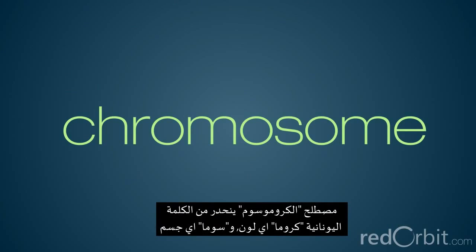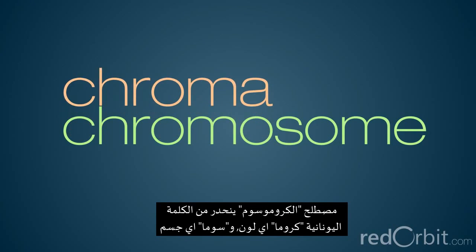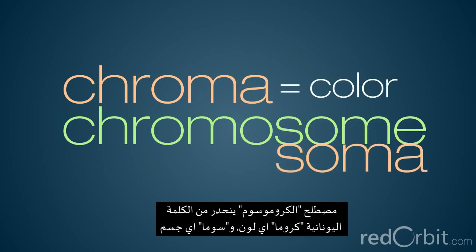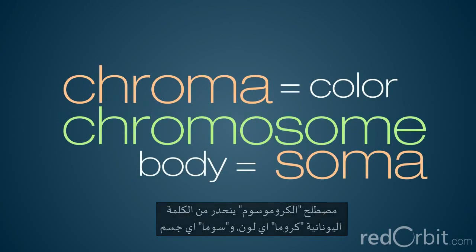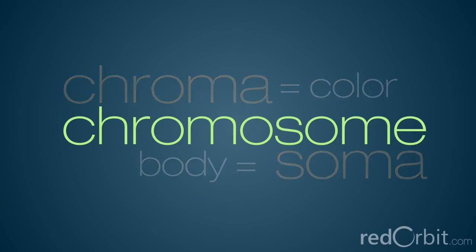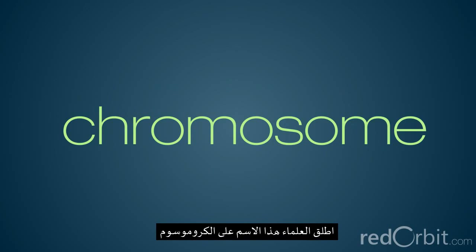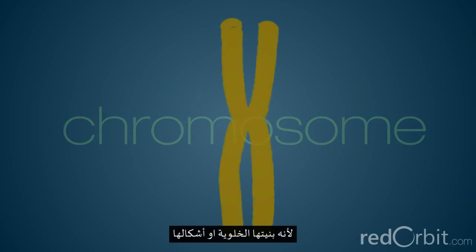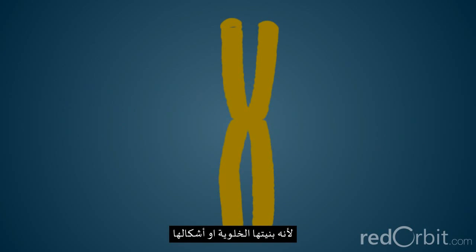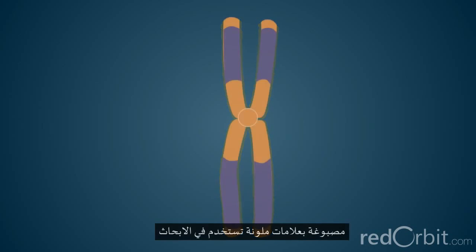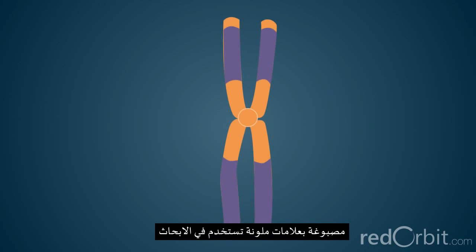The term chromosome comes from the Greek words for color, chroma, and body, soma. Scientists gave this name to chromosomes because they are cell structures, or bodies, that are strongly stained by some colorful dyes used in research.